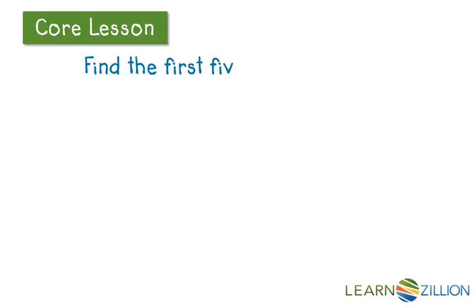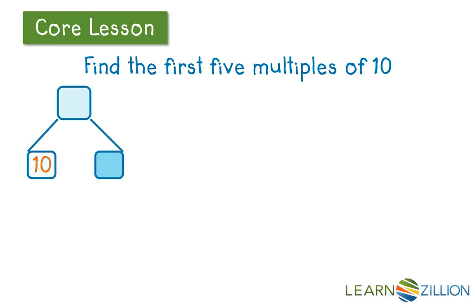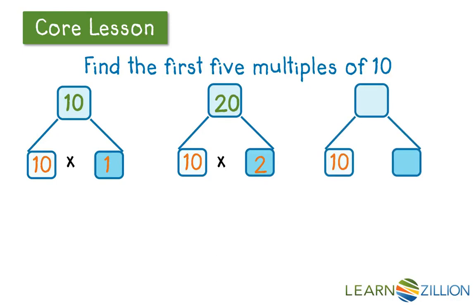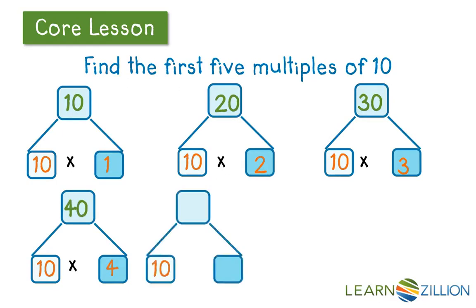Let's start with finding the first five multiples of 10. I draw my number bond and I know I'm working with 10 on the left side and I start with my first multiple. I know 10 times 1 is 10. I go to my next number bond. 10 times 2 is 20. I draw the next. I know 10 times 3 is 30. 10 times 4 is 40. 10 times 5 is 50. I have the first five multiples of 10.